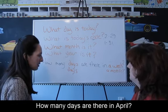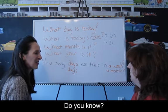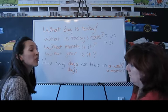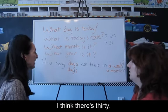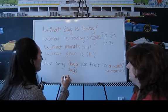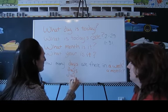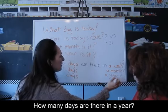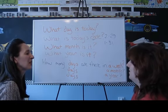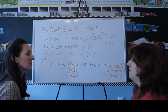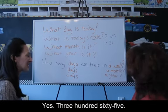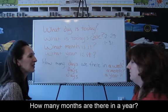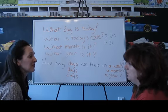How many days are there in April? Do you know? I think it's 30. 30. I could change this question: how many days are there in a year? Three hundred sixty-five. Yes, 365. And how many months are there in a year? 12.